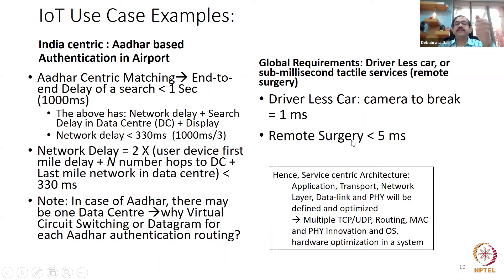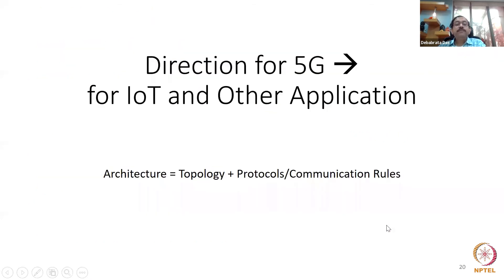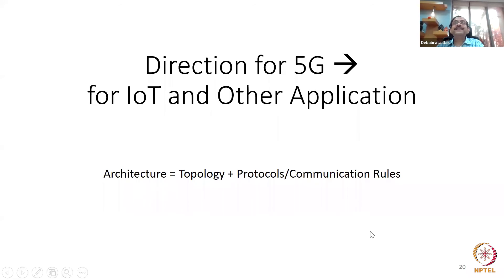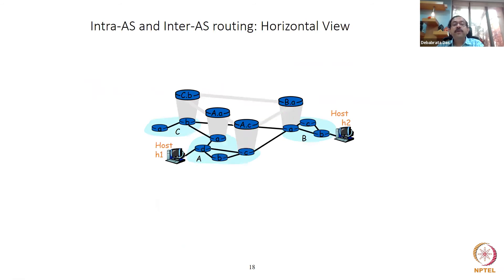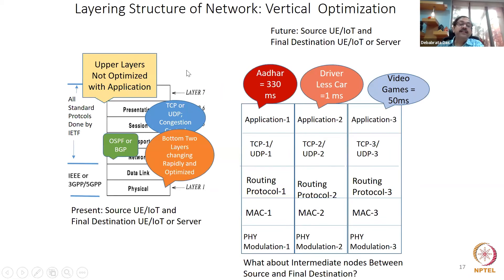I need the service and application, and my application, transport, network, data link, and physical layers will be defined and optimized. Multiple TCPs, multiple UDP variants, multiple routing protocols — all optimized top to bottom — implemented to give you network slicing. The present one-size-fits-all (left side) you have studied; the right side — network slicing — is the future.